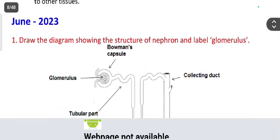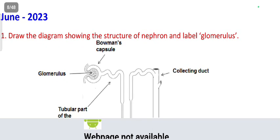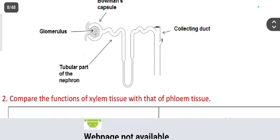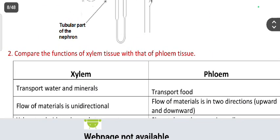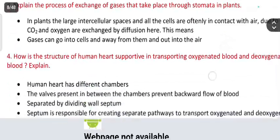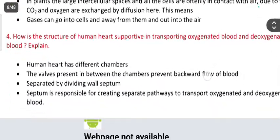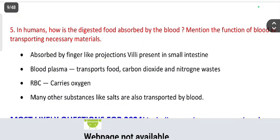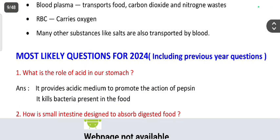From June 2023: draw a diagram showing the structure of the nephron and label the glomerulus. Next, compare the function of xylem tissue and phloem tissue. Explain the process of exchange of gases through the stomata in plants. How is the structure of the human heart supportive in transporting oxygenated and deoxygenated blood? In humans, how is digested food absorbed by blood, and mention the functions of blood in transporting necessary materials. These are the most likely questions for 2024.